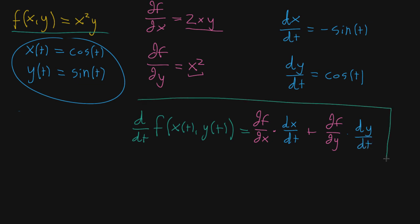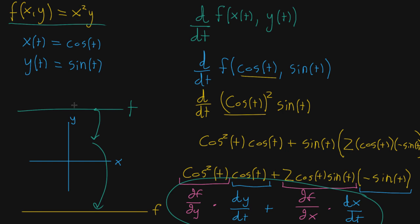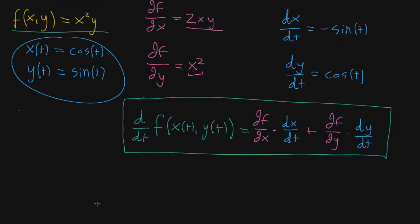This right here has a name: the multivariable chain rule. If we take the ordinary derivative with respect to t of a composition of a multivariable function — in this case just two variables — with two intermediary single-variable functions x(t) and y(t), the result is the partial derivative with respect to x multiplied by dx/dt, plus the partial derivative with respect to y multiplied by dy/dt. This is the simplest version of the multivariable chain rule: you start with one dimension, move to two dimensions, then back to one. In the next video I'll talk about the intuition for why this is true, a more generalized form using vector notation, and possibly a more formal argument.